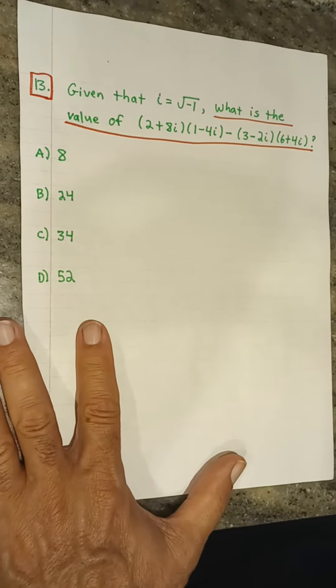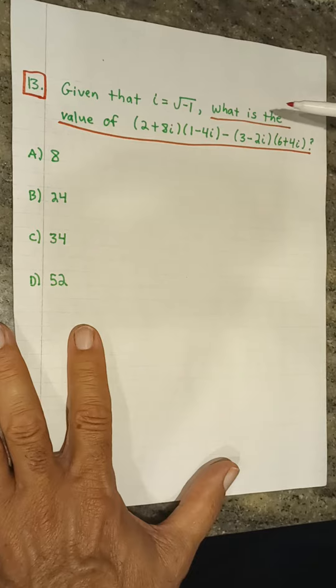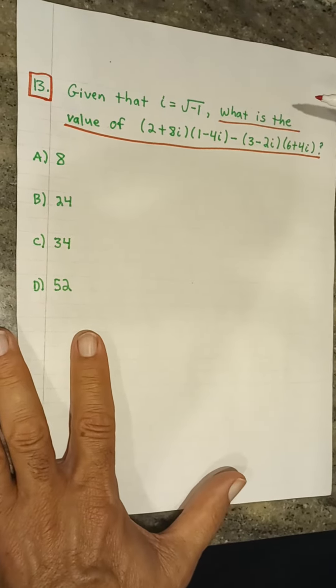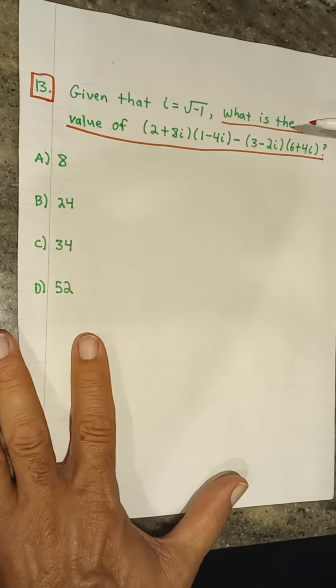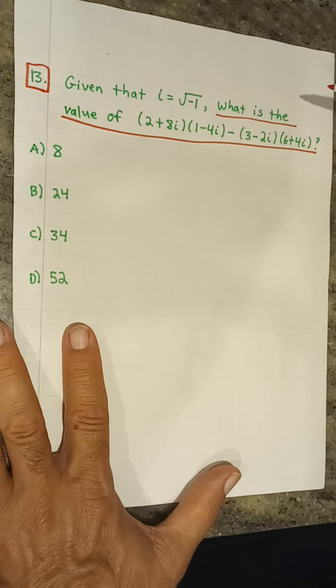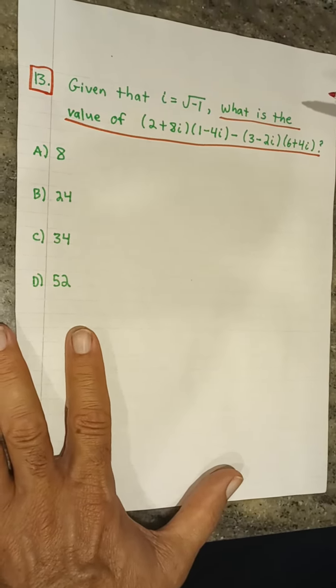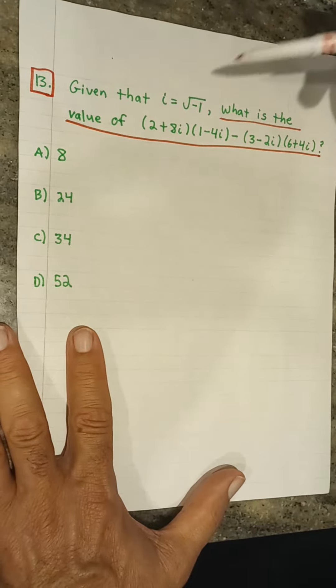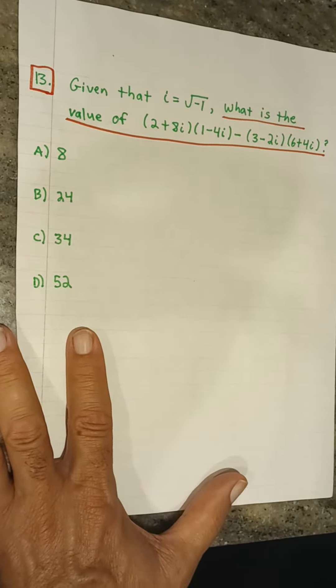Hello, Dr. Bill here. Today we're going to look at some imaginary numbers and we're going to see what's happening here when we do some foiling. And it says given that i equals the square root of negative 1, what is the value of, and they obviously give what we see here.